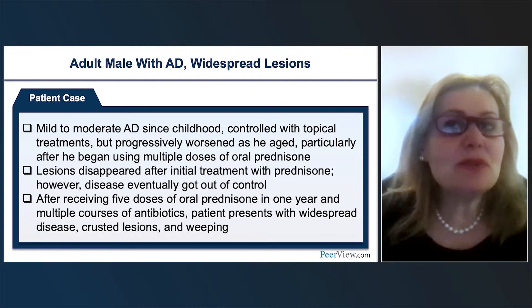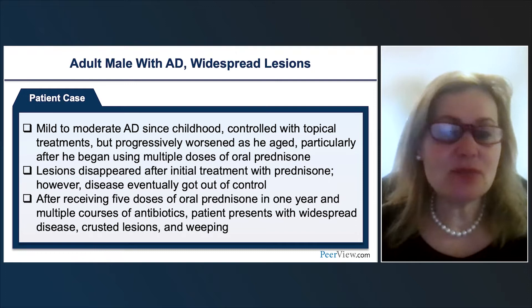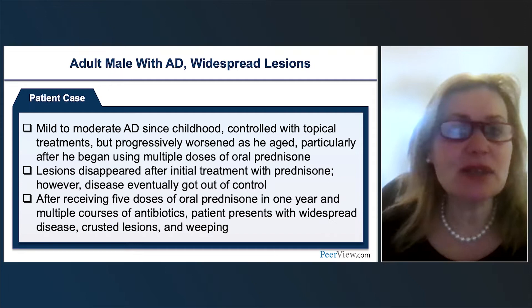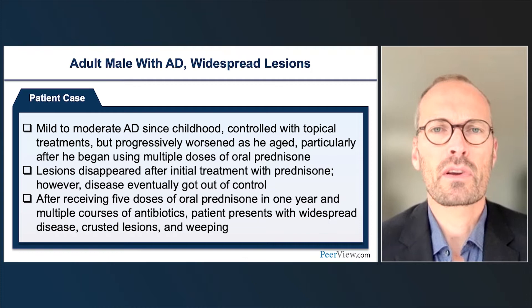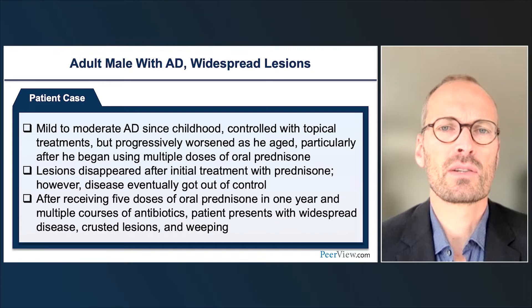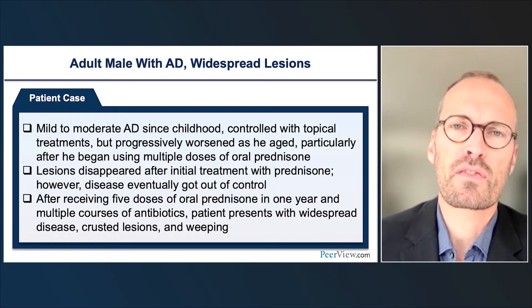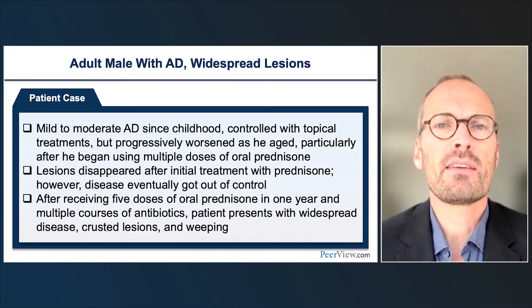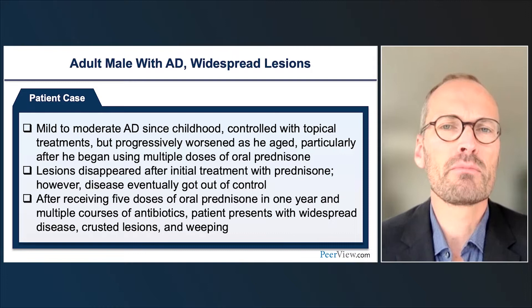If you want to put a patient on dupilumab who was on oral prednisone, the challenge is the flare when removing prednisone. The problem with methotrexate is it's so slowly acting. I would prefer cyclosporine because it acts quickly within a few weeks — remove the patient from prednisone as fast as possible and replace with cyclosporine and dupilumab. Even though dupilumab has a slower kick-in compared to JAK inhibitors, it has a sufficiently fast onset of action, so bridging hasn't been that important in my clinic.